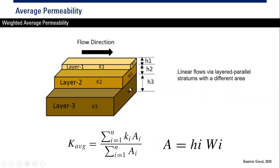Another configuration is still parallel — linear flow through layered parallel strata with different area. You have layer one, layer two, layer three with different permeability k1, k2, k3, different thickness h1, h2, h3, and different width w1, w2, w3, or different area A1, A2, A3.